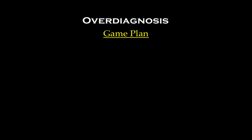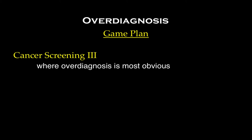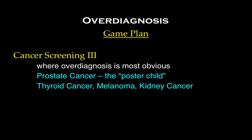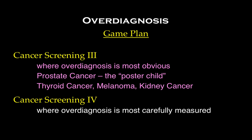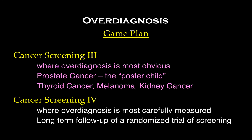Here's the game plan. In this video, we'll consider where over-diagnosis is most obvious: prostate cancer, which is the poster child for the problem. We'll also consider thyroid cancer, melanoma, and kidney cancer — where you can see the problem of over-diagnosis from space. In the next video, we'll consider where over-diagnosis is most carefully measured from a long-term follow-up of a randomized trial of screening, with examples in lung cancer and breast cancer.